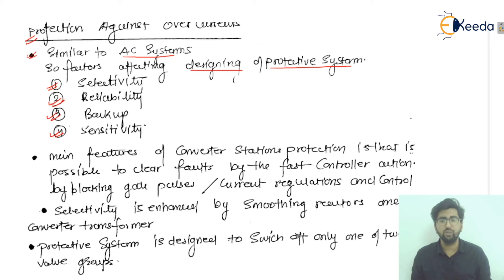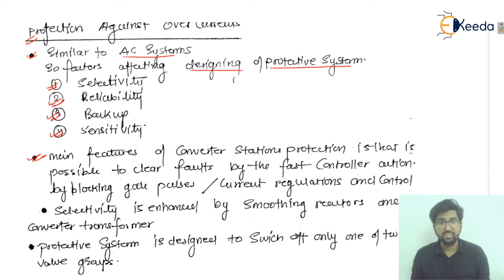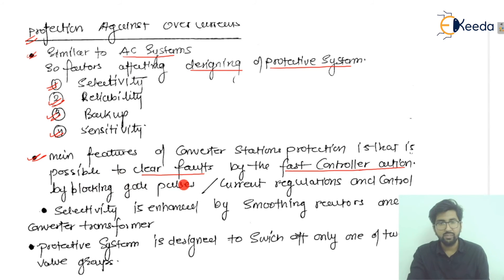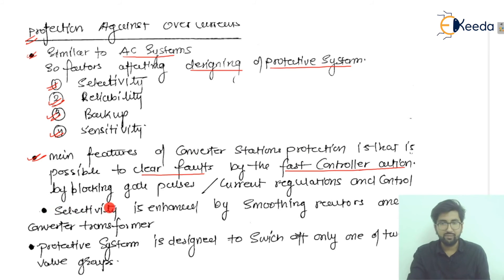Now the main features of converter station protection: it is possible to clear the fault by fast controller action — in milliseconds and microseconds — by blocking the gate pulses. If we block the gate pulses within a short duration of time, that is called current regulation and current control. These are the main features related with the protection schemes.